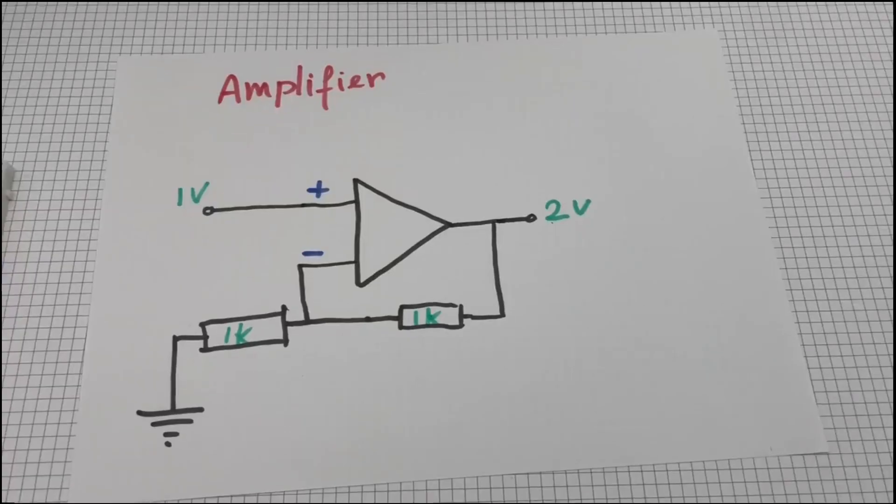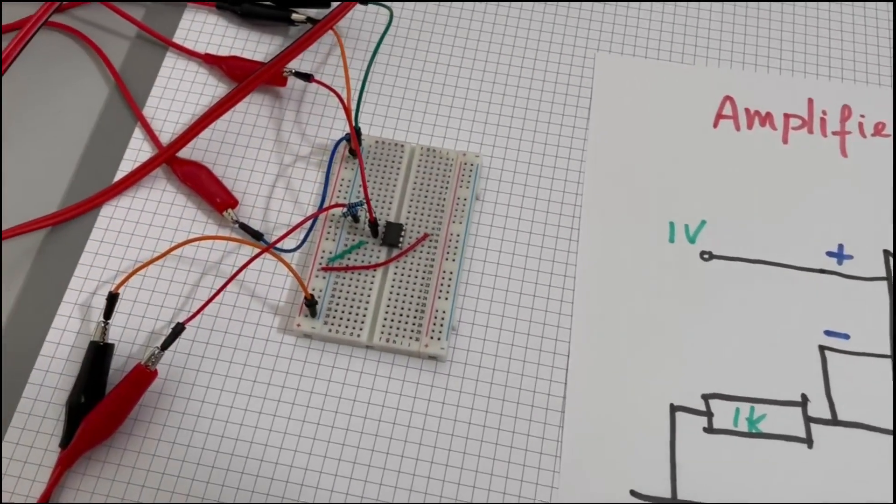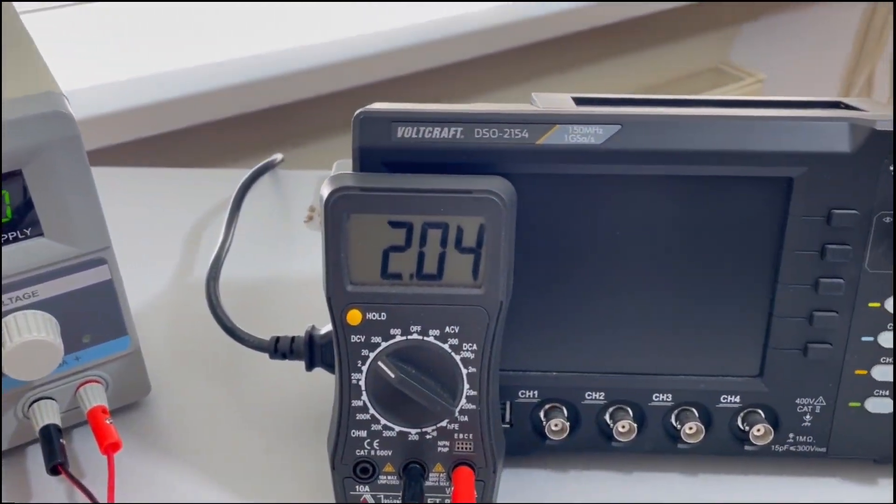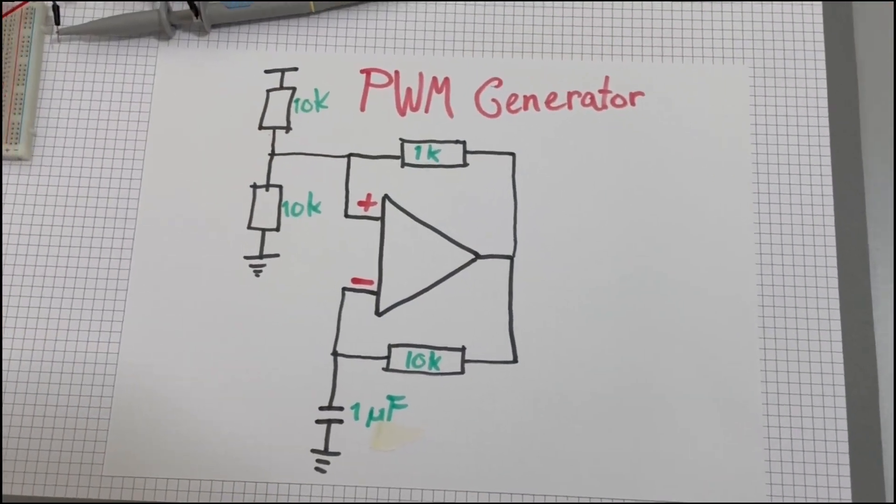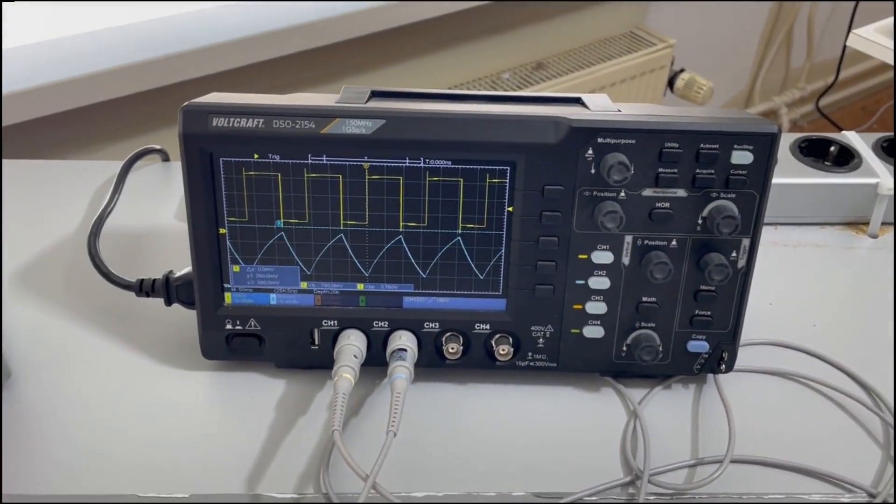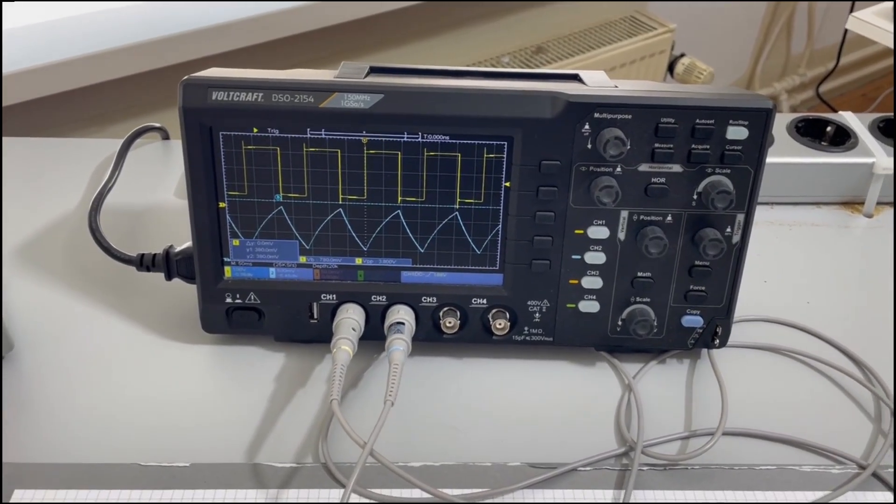What can it do? Amplifier. We can use a single op-amp to amplify a signal by a certain amount. PWM. We can have it make a square wave signal, and even make it do PWM if we use the second op-amp from the IC.